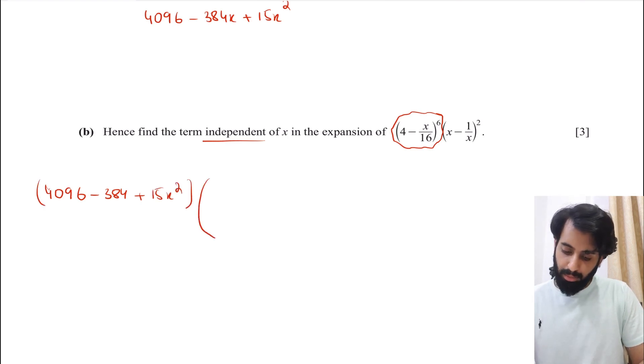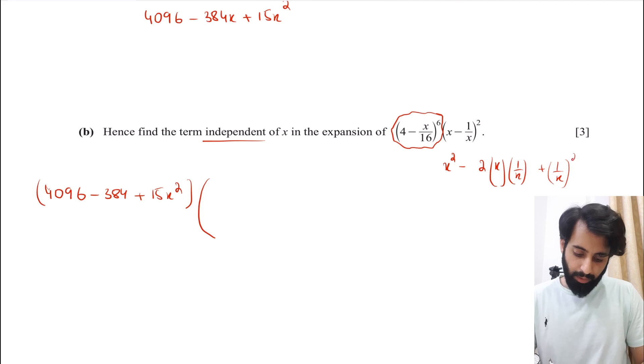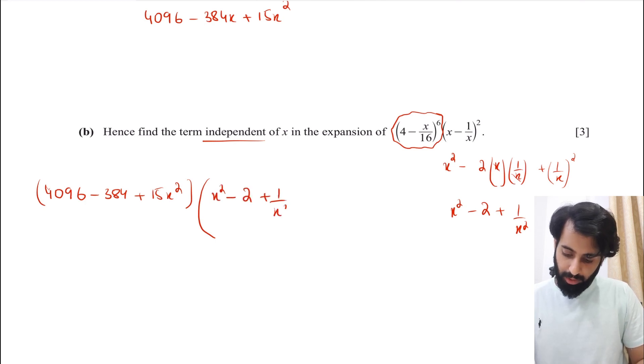Okay. And this is being multiplied by (x - 1/x)^2. Okay. Now, this I need to expand, but I'm not going to use binomial. Instead, I'm going to use the identity, which is (a - b)^2. So this becomes a^2 - 2ab + b^2. So this becomes x^2 - 2 + 1/x^2.